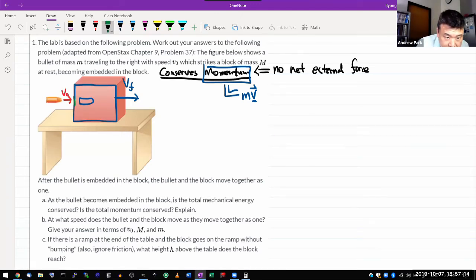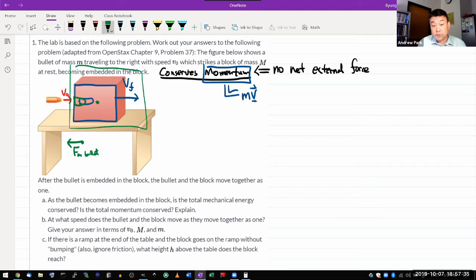As this bullet is getting embedded, there is a force on the bullet. The force on the bullet is pushing it to the left. That's what's slowing down the bullet. This force is being exerted by the block. If I say this is my entire system, then the block is in the system. That means this is an internal force.